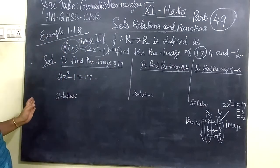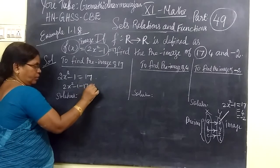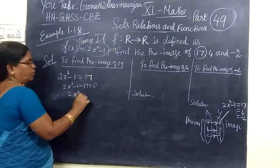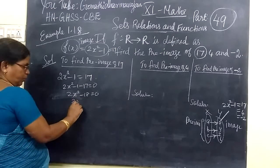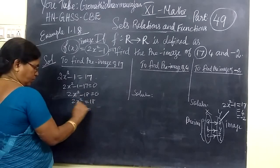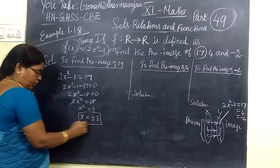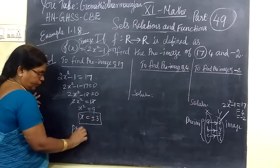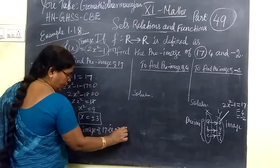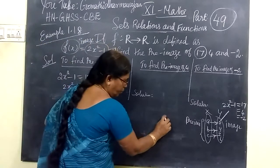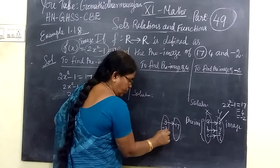So 2x² - 1 - 17 = 0, which implies 2x² - 18 = 0. Therefore 2x² = 18, so x² = 9. Thus x = ±3. For the preimage, there are two values. So the preimage of 17 is {+3, -3}.